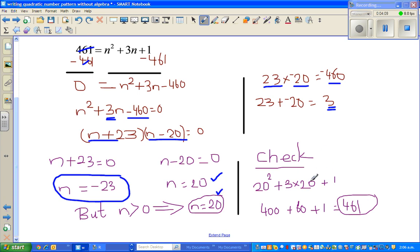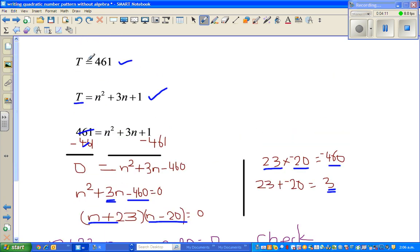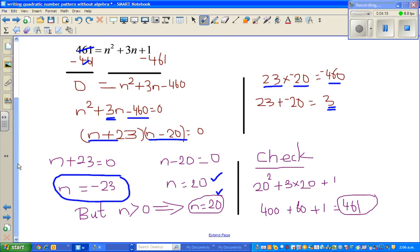And it's always good to check. Now what was our formula? T is N squared plus 3N plus 1. So I can put the value of 20 in this.